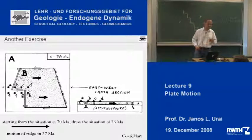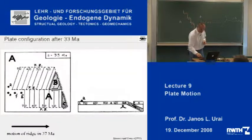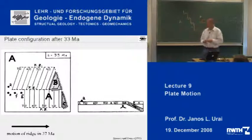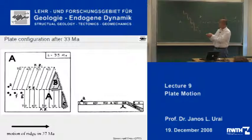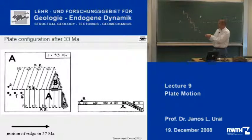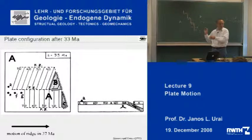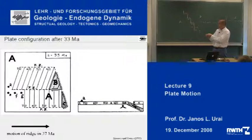But before that happens, there are some complications. At 70, 60, 50, 40, 33 million years, the ridges are here. There is still the little transform here. But notice that this part of the ridge has now touched the subduction zone.